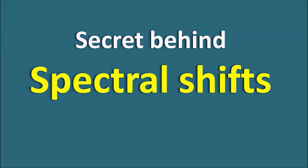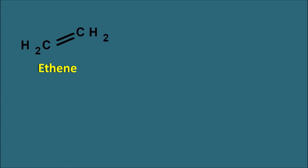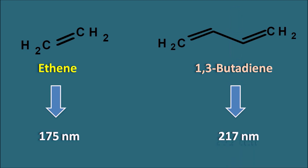Hi, today we will see the secret behind spectral shifts. Let us take two structures: the first one is ethene and the second one is 1,3-butadiene. The lambda max values of ethene and 1,3-butadiene are going to differ, where ethene has a lambda max of 175 nanometers and 1,3-butadiene shows a lambda max at 217 nanometers. That means in 1,3-butadiene, we can observe a bathochromic shift because of the presence of an extra double bond.